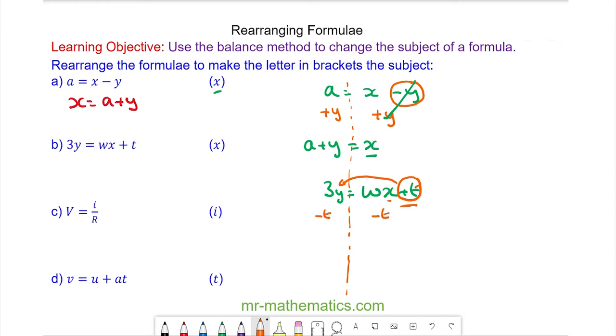I'm left with 3y minus t equals wx and because wx is the product of two values, I'll divide both sides by w because w divided by itself will make 1. I'm left with 3y minus t divided by w equals x.